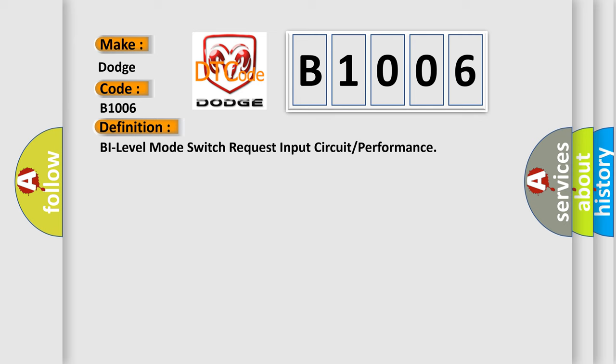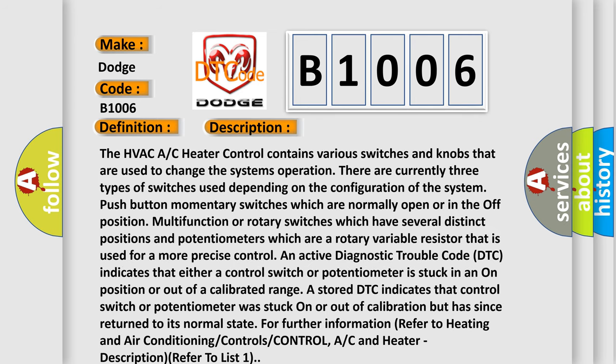Here is a short description of this DTC code. The HVAC/AC heater control contains various switches and knobs used to change the system's operation. There are currently three types of switches used depending on the configuration of the system: push button momentary switches which are normally open or in the off position; multi-function or rotary switches which have several distinct positions; and potentiometers, which are a rotary variable resistor used for more precise control. An active DTC indicates that either a control switch or potentiometer is stuck in an on position or out of a calibrated range. A stored DTC indicates that the control switch or potentiometer was stuck on or out of calibration but has since returned to its normal state.